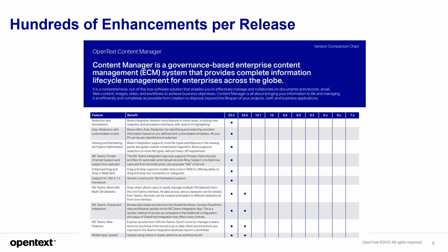This document that you see here is one of our most popularly requested documents — it's a version comparison chart. You can easily see not only all the new features from our current version, but all the ones in between your current version and our latest release. So say if you were on version 9.4 or 10 and you were looking to upgrade to 23.4, with this document you would see all the features you missed between your current version and the latest one that you would now benefit from if you were to upgrade. This document and many other resources can be found on our upgrade portal, and we'll be sure to share the link in this YouTube video.